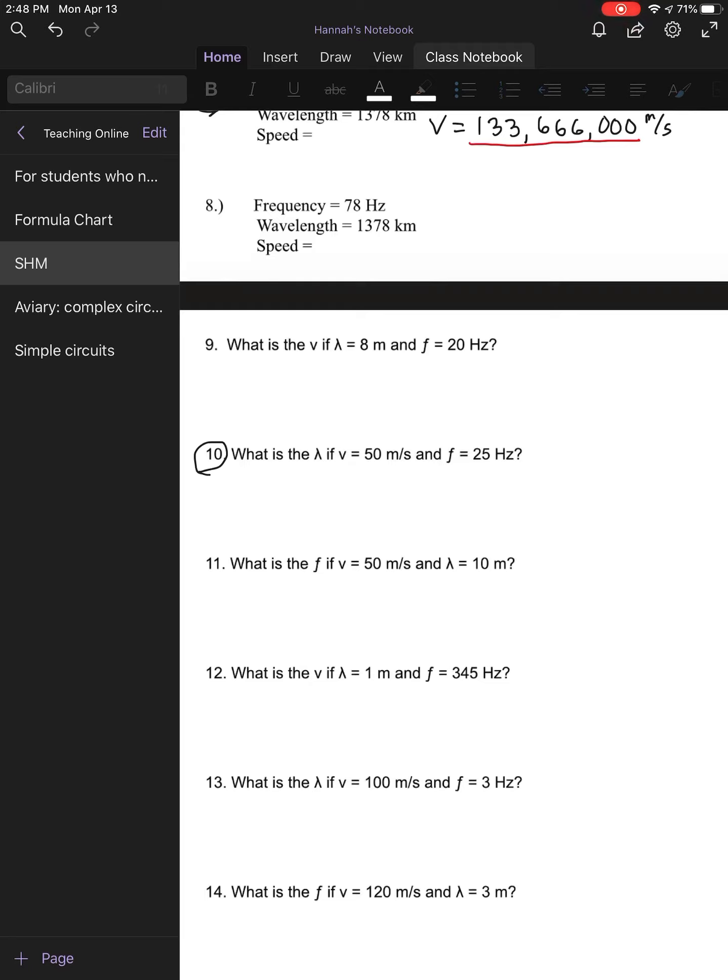And for my last question, we're going to be looking to find the wavelength if your velocity is 50 meters per second and your frequency is 25 hertz. Your wavelength is equal to velocity divided by frequency. And this is a simple plug in because we have all the correct units. So my velocity is 50 meters per second divided by 25 hertz, and 50 divided by 25 is 2. And my unit for wavelength is meters.